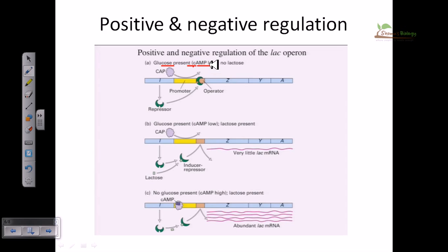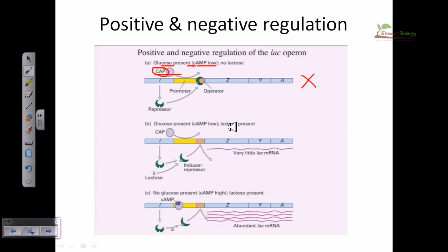With low cyclic AMP, the CAP (cyclic AMP-activated protein) is functionally inactive because CAP cannot act on its own — it needs cyclic AMP as a companion to form a dimer and sit onto the promoter sequence. So in this case the lac repressor binds the operator and transcription is blocked. When both glucose and lactose are present, there is still low cyclic AMP due to the glucose, so CAP does not bind the promoter properly.